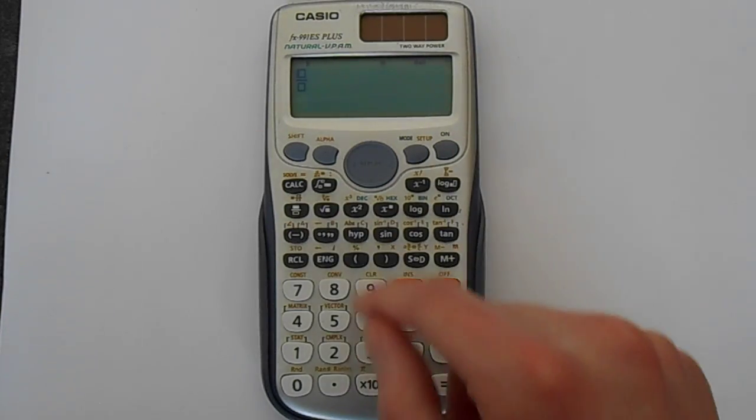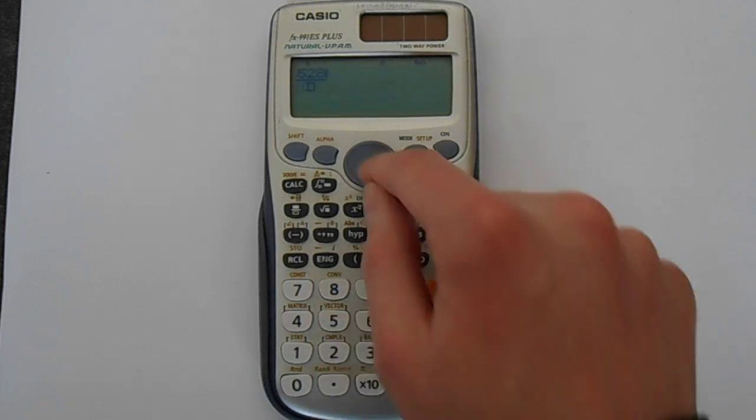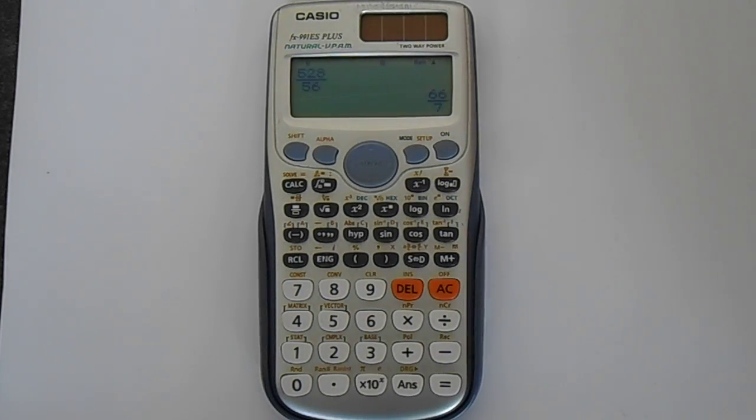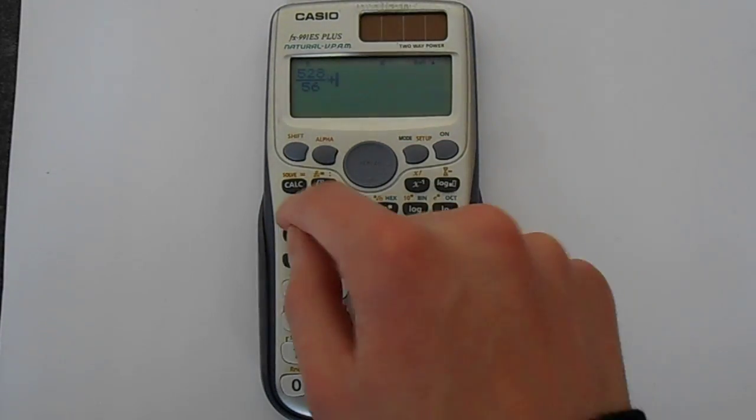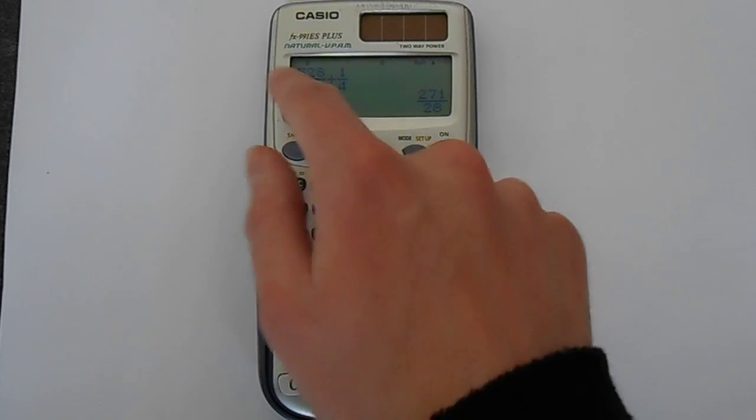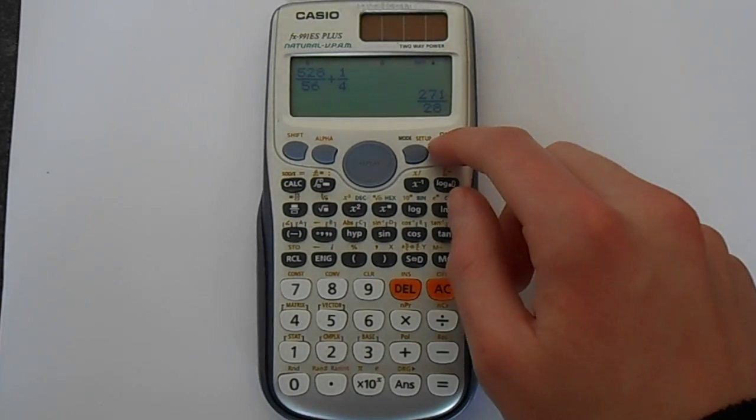It can work with fractions. It follows all the standard conventions that you're used to. Say 528 over 56, that gives you 66 over 7. It knows how to do that. Say you wanted to add a quarter to that, you can do all sorts of operations with fractions displayed in a nice format. It knows how to simplify that.